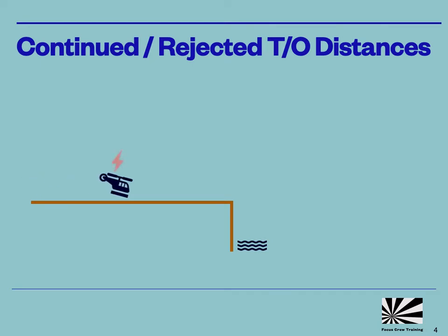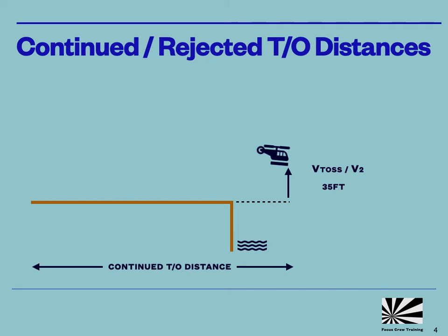If the helicopter suffers a power loss from one engine during the departure at or after the takeoff decision point, then it will continue to accelerate until it reaches a point at which it's at least 35 feet above the takeoff surface and the speed is the takeoff safety speed or V2 defined for the helicopter type and profile. The horizontal distance to reach this point is the continued takeoff distance and obviously needs to be clear of obstacles.